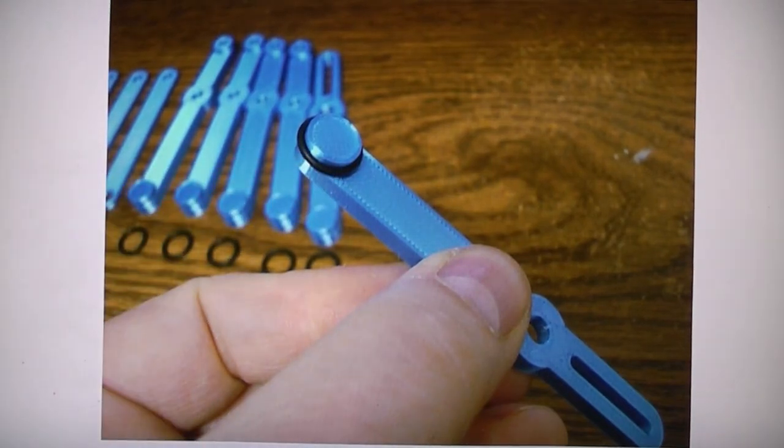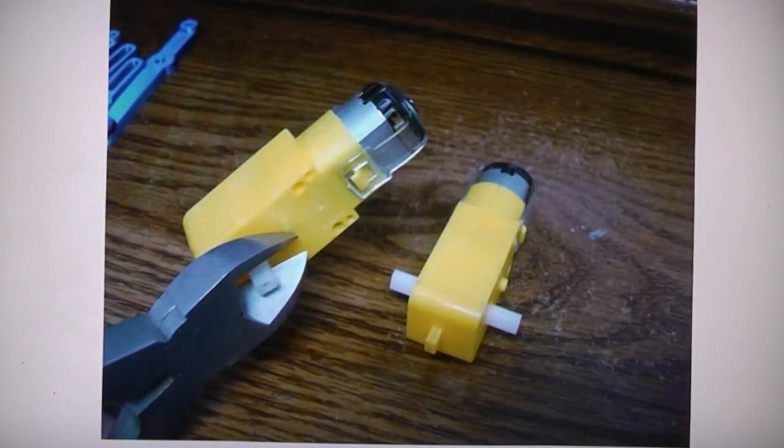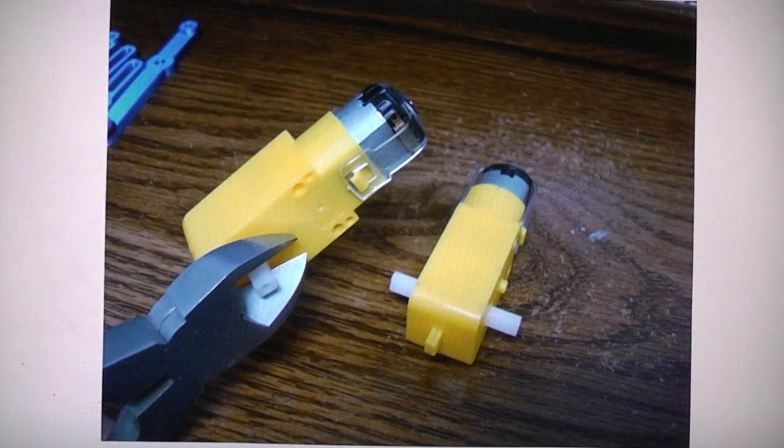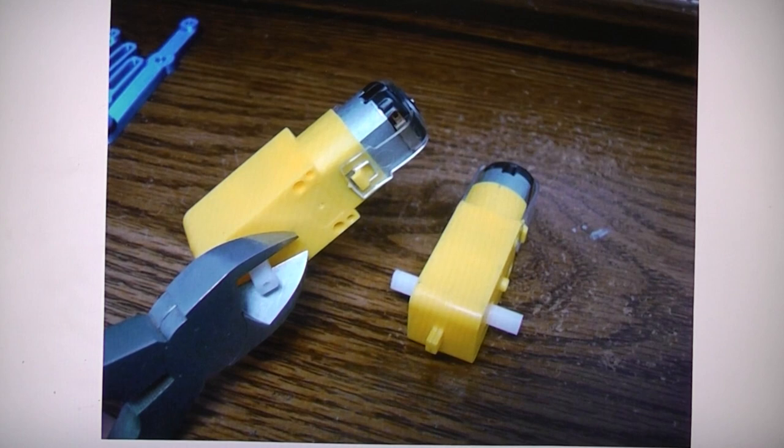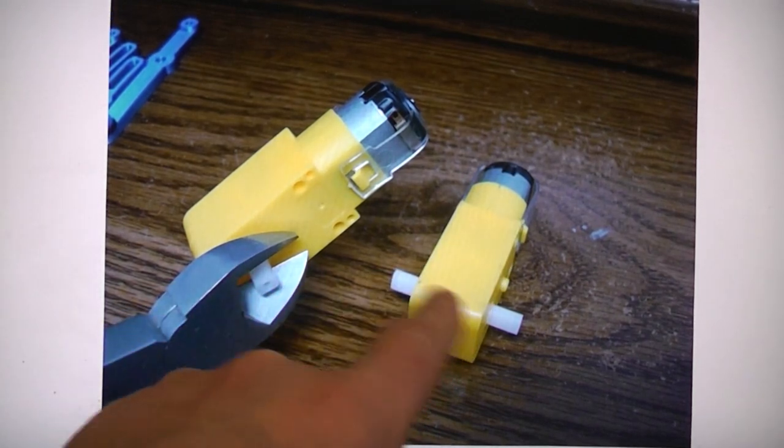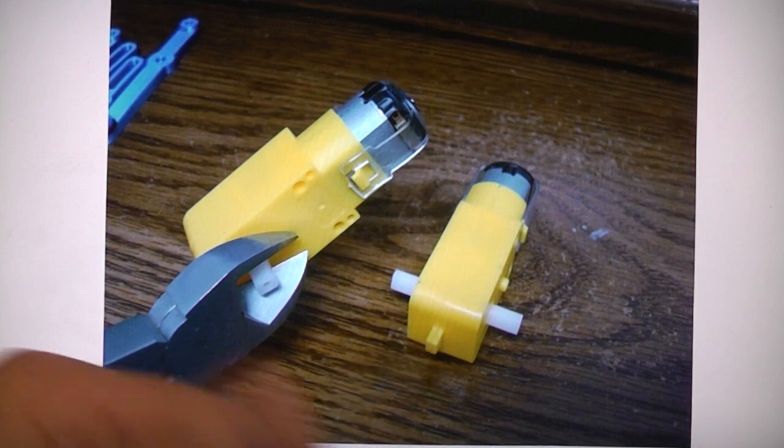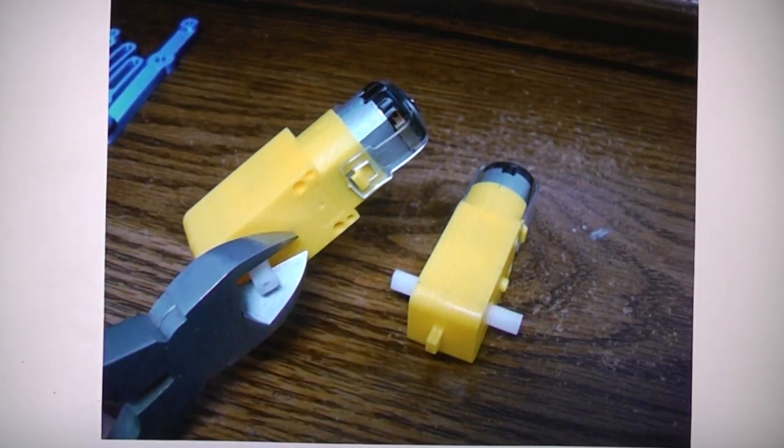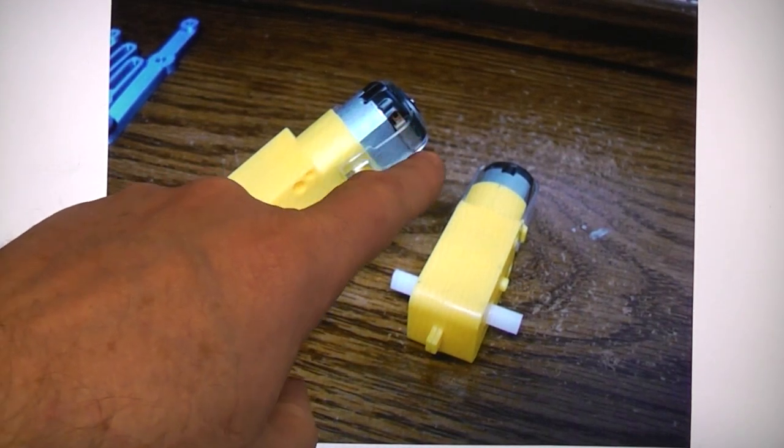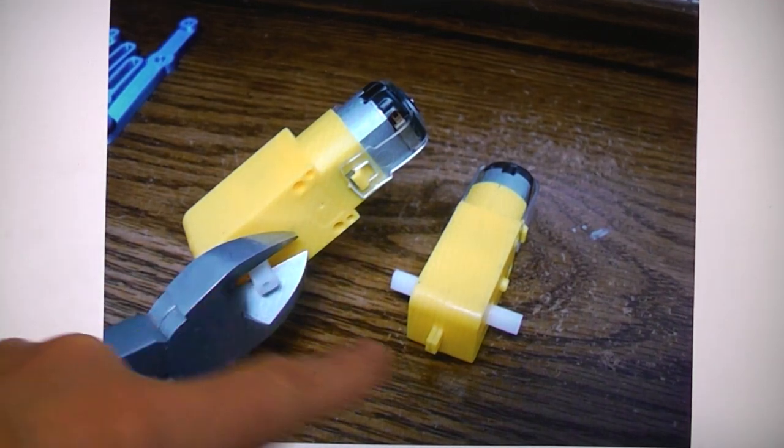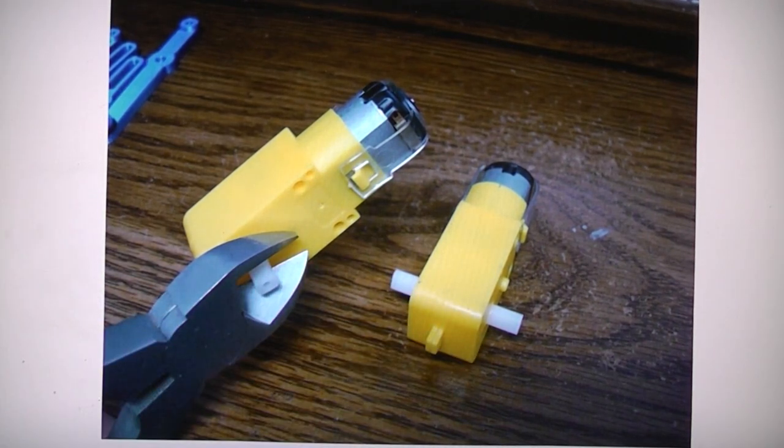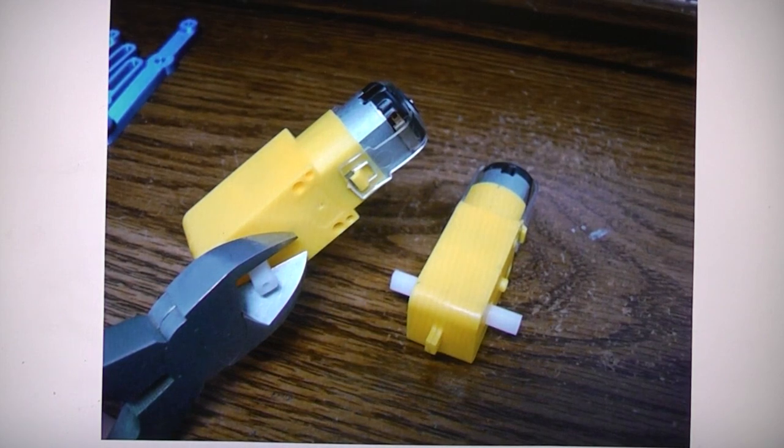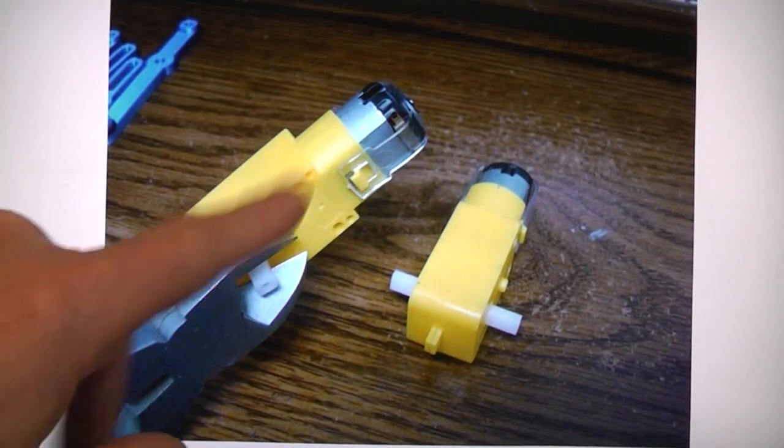You can buy motors on eBay with only one shaft, but I had these dual shaft ones from other robot projects. Find the side with the battery contacts and cut that shaft off with a bandsaw, hacksaw, or hobby saw. Cut the shaft off on the battery contact side on both motors.